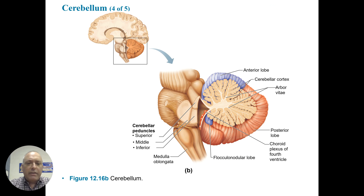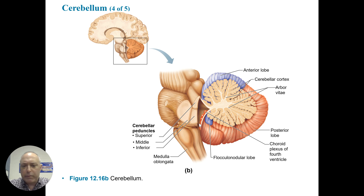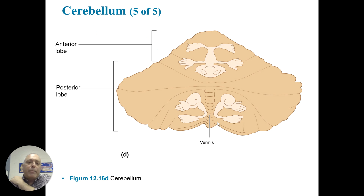The cerebellum is a cortex for fine motor movements. There are different cerebellar peduncles — superior, middle, and inferior. There's an anterior lobe, a cerebellar cortex, and this tree-like structure called the arbor vitae, and the posterior lobe. You can make out the choroid plexus of the fourth ventricle. Each ventricle has its own choroid plexus that makes cerebrospinal fluid. Since the cerebellum is involved with movement, you can make a homunculus for the different regions, showing a lot of innervation with the foot, hand, and face.